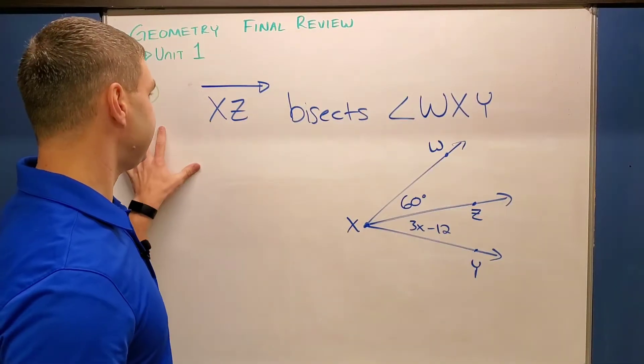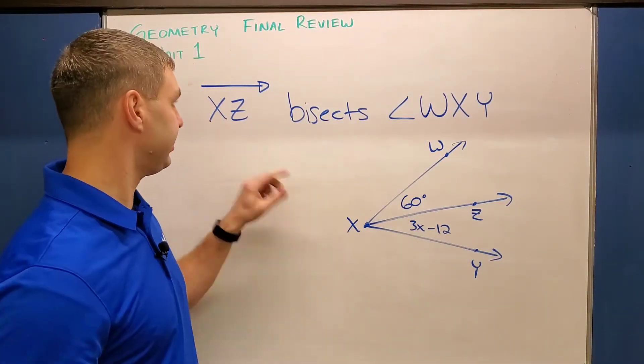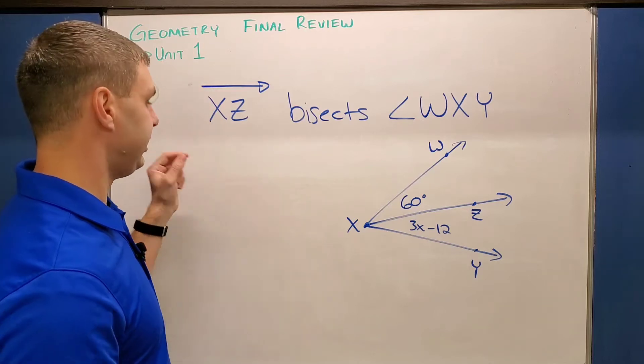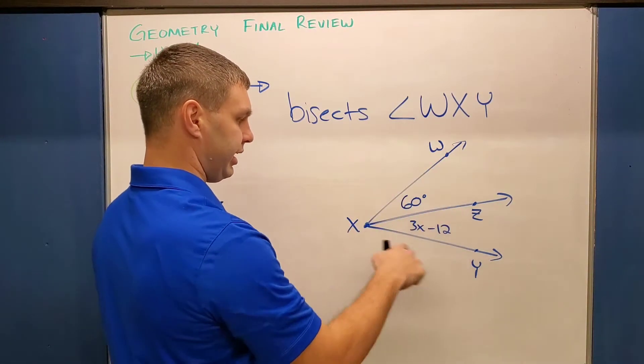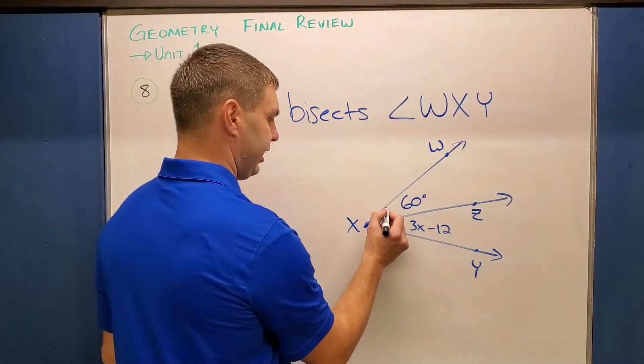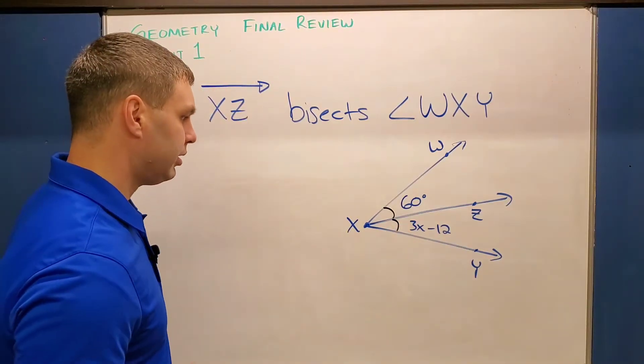Next question. Number eight says XZ bisects angle WXY. You notice XZ here is a ray because there's only one arrow above the X and the Z. And so because of that, if this is WXY and it's being bisected, bisecting means it's cut exactly in half or this angle is going to be congruent to this angle.